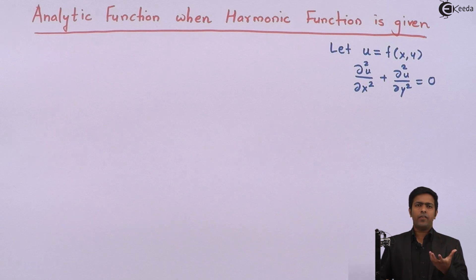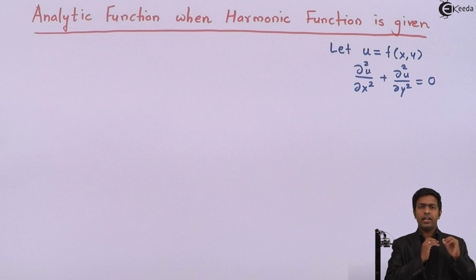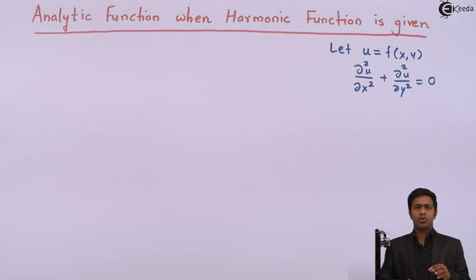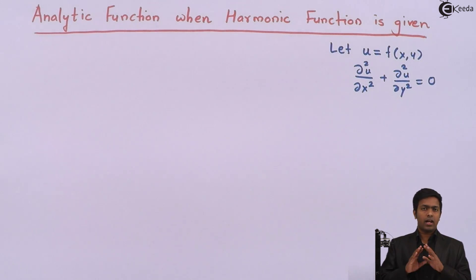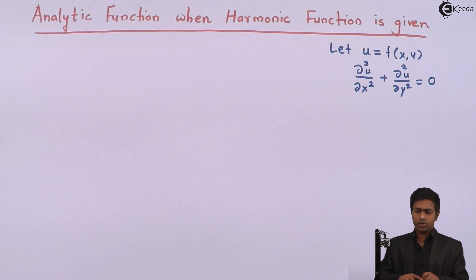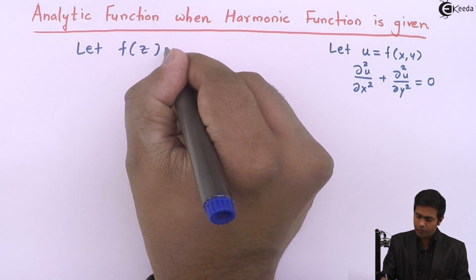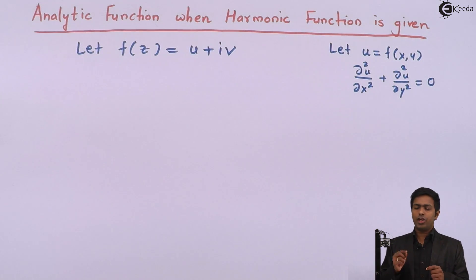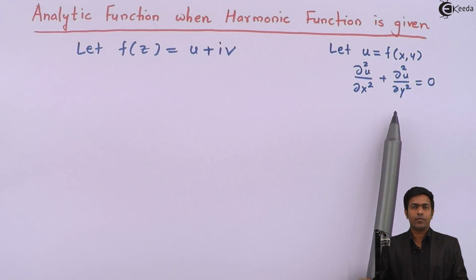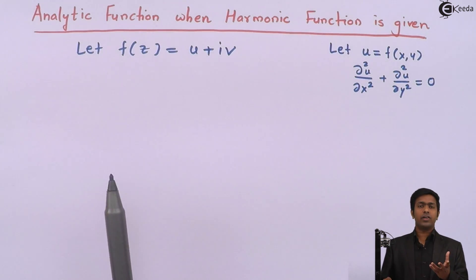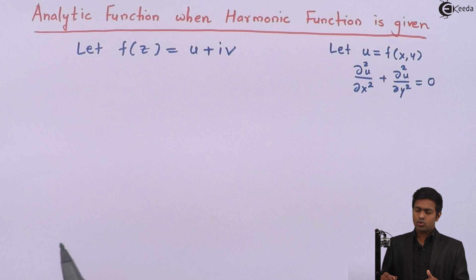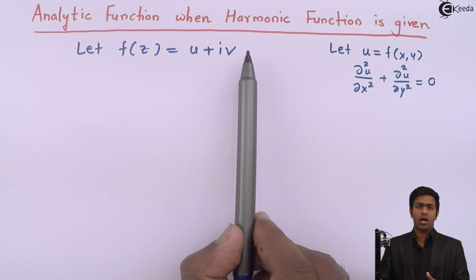Now, whenever a function f(z) is analytic, it has two parts: real part u and imaginary part v, and both u and v are harmonic. This is a property of analytic functions. So if f(z) = u + iv is analytic, then u and v are called conjugate harmonic functions of each other — u is the conjugate harmonic of v, and v is the conjugate harmonic of u.